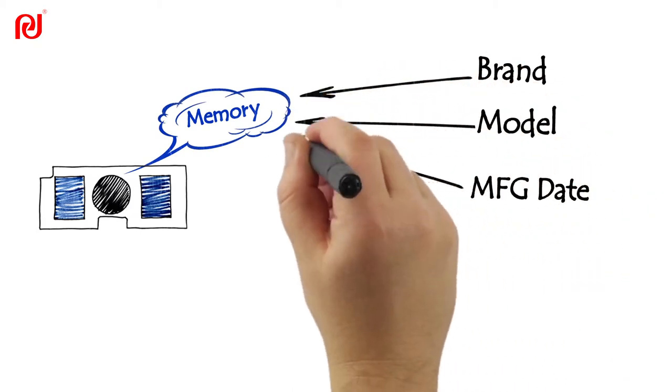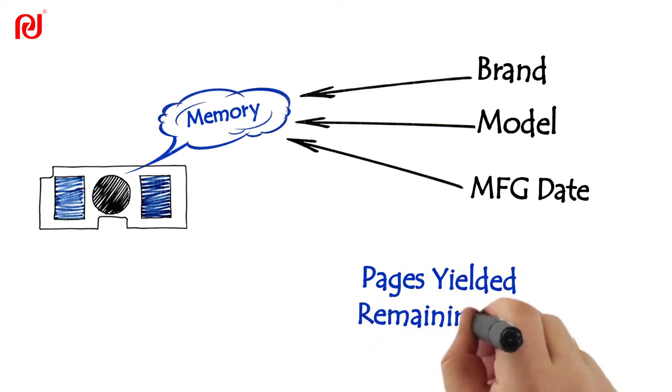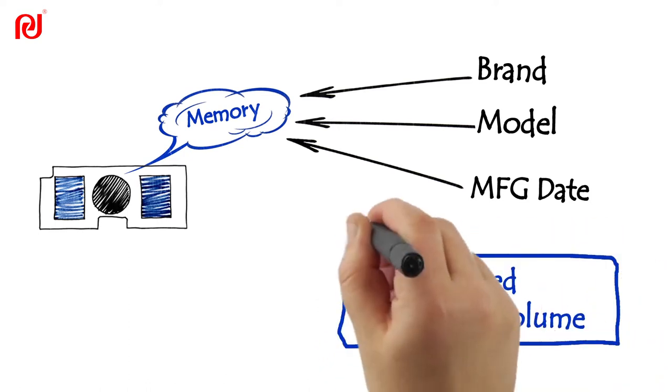The memory also stores pages yielded and remaining volume, which are changeable data and updated by printer during printing.